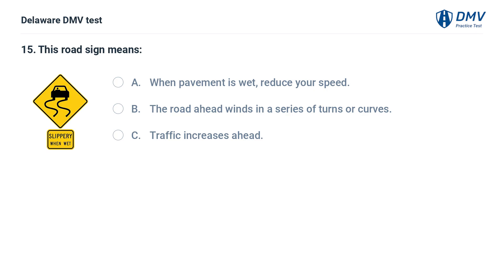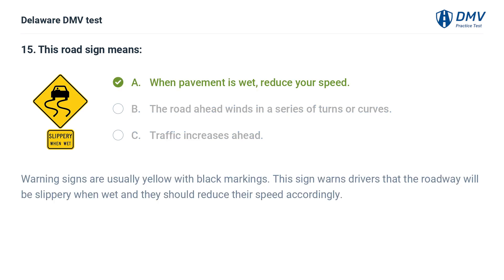This road sign means: A. When pavement is wet, reduce your speed. B. The road ahead winds in a series of turns or curves. C. Traffic increases ahead. Answer: A. When pavement is wet, reduce your speed. Warning signs are usually yellow with black markings. This sign warns drivers that the roadway will be slippery when wet and they should reduce their speed accordingly.